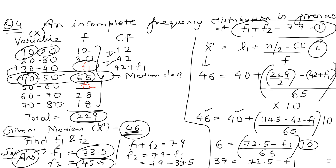If the question mentions that the frequency cannot be a fraction, you can take F1 as 34 and F2 as 45. But these are the actual true answers. Frequency cannot be negative or in fractions, so rounding off 33.5 to 34 and 45.5 to 45 is acceptable if required.